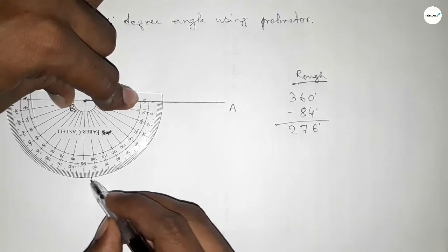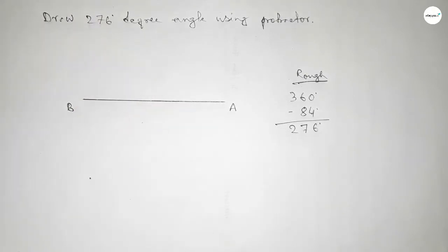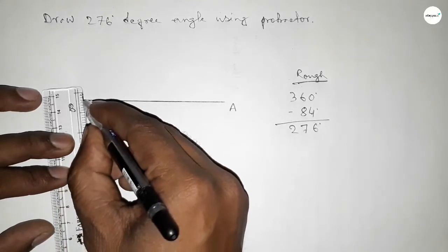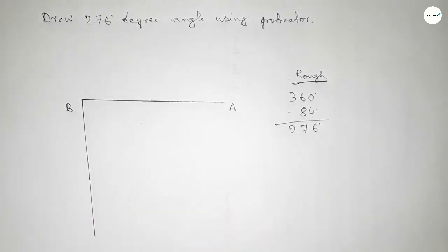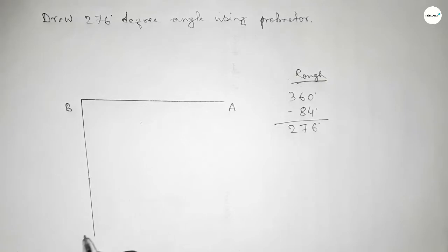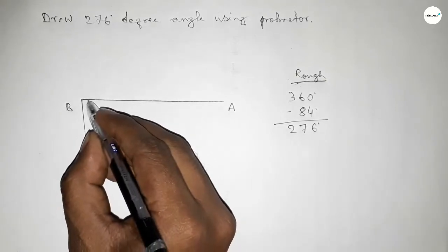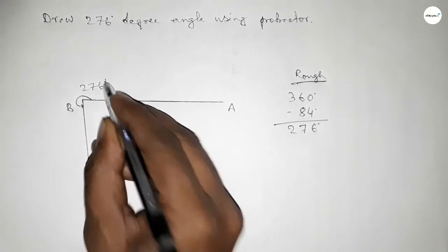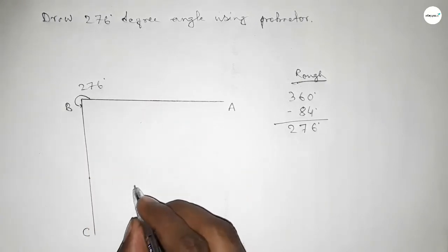So if we subtract 84 degree angle from 360 degree, then we can get 276. Now joining this side and taking here C point. So angle ABC, after this, this is 276 degree angle.